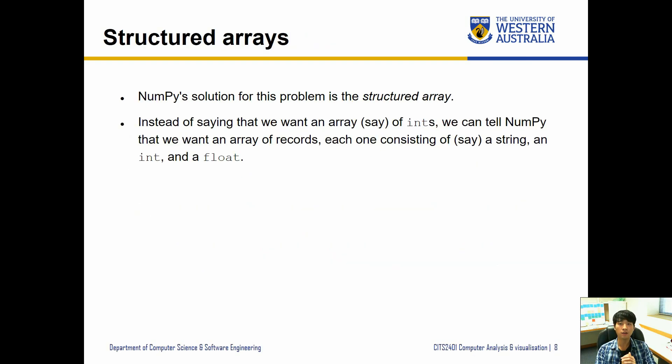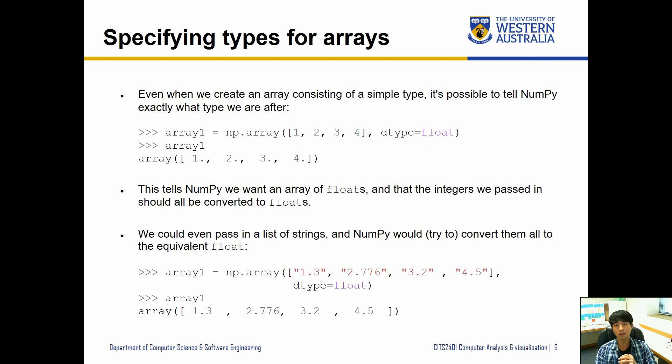That's where structured arrays in NumPy comes in handy. Instead of saying we want an array of ints, we can tell NumPy that we want an array of records, each one consisting of say a string, an integer, and a float. We specify what those data types are, and it can store a bunch of them together.